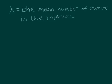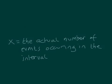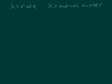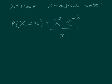So what is this formula? We need to consider two variables. The first is lambda, which is the mean number of events occurring in a particular interval — sometimes written as a rate or an average. And x is the actual number of events occurring in the particular interval. Using these parameters lambda and x, it can be shown that the probability that the actual number occurring equals a particular value is: lambda to the power x, times e to the minus lambda, over x factorial. Here e is 2.718...